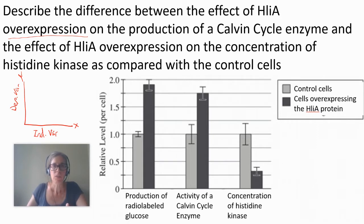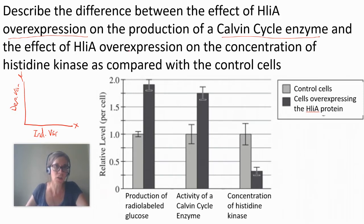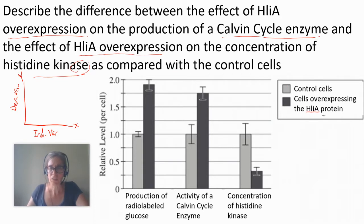So the question is about the effect of HLiA overexpression on the production of a Calvin cycle enzyme — that's something to do with photosynthesis, we haven't done that unit yet — and the effect on the concentration of histidine kinase, which is an enzyme, compared with control cells. The key shows control cells, so these bars are the control cells.